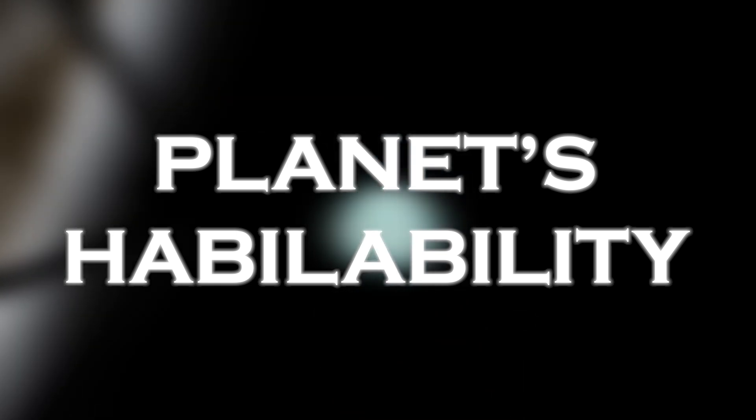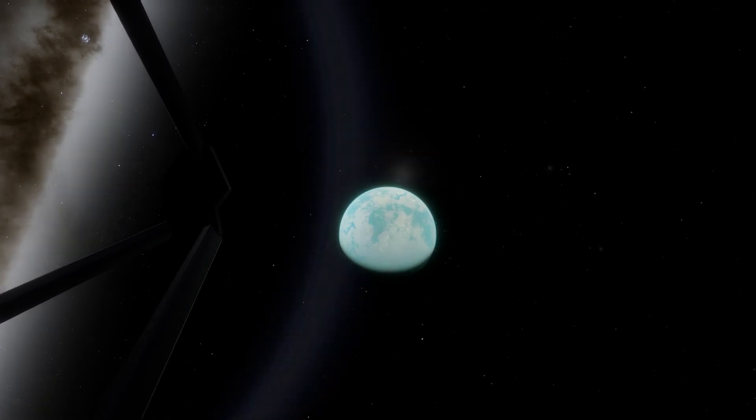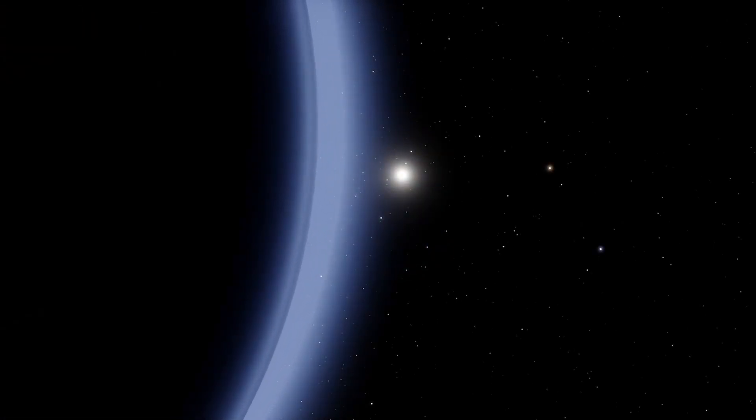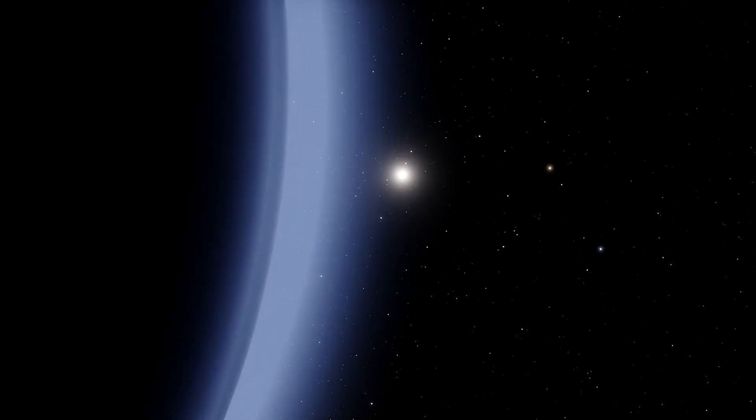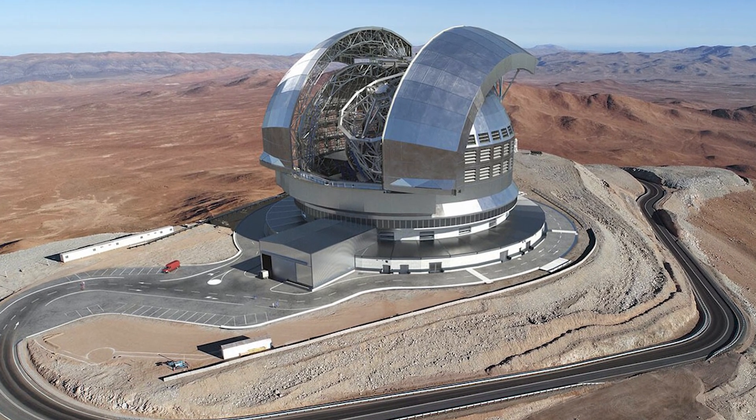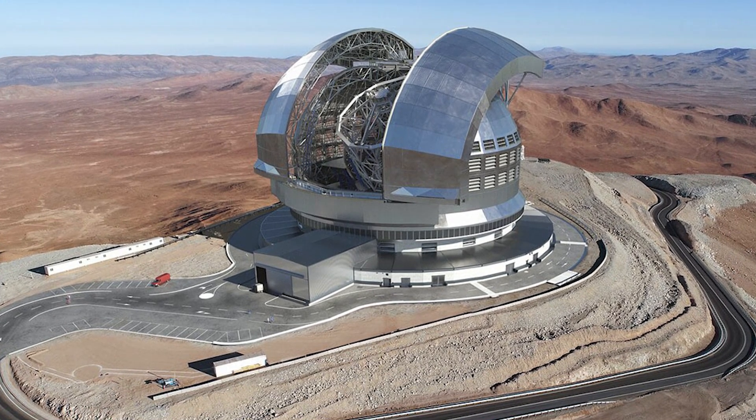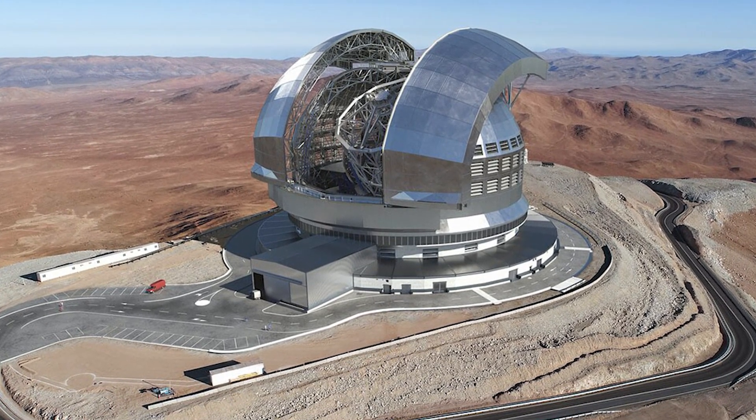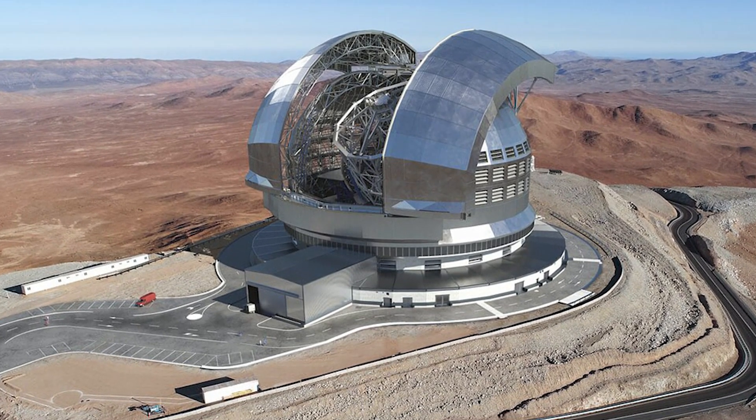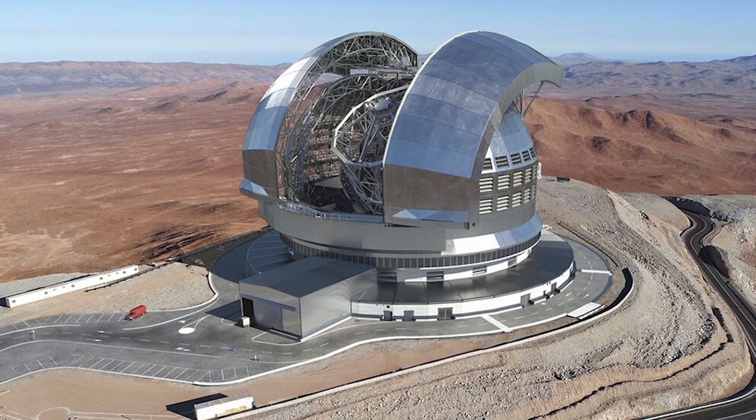It is important to keep in mind that the JWST cannot explore all potential habitable worlds, as it has limited capabilities and can only observe some of the exoplanets closest to Earth. Therefore, astronomers are turning to ground-based observatories such as the Extremely Large Telescope, the ELT, which is expected to become operational in 2028, and allow for a deeper investigation of the atmospheric structure of distant exoplanets.